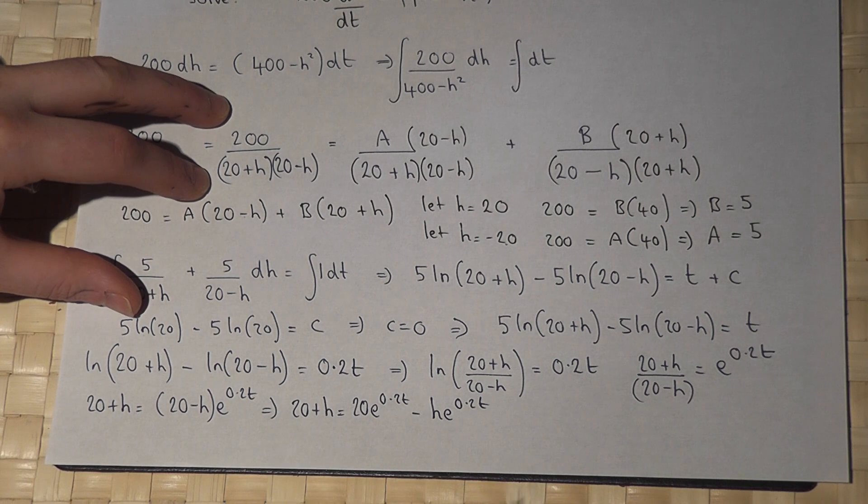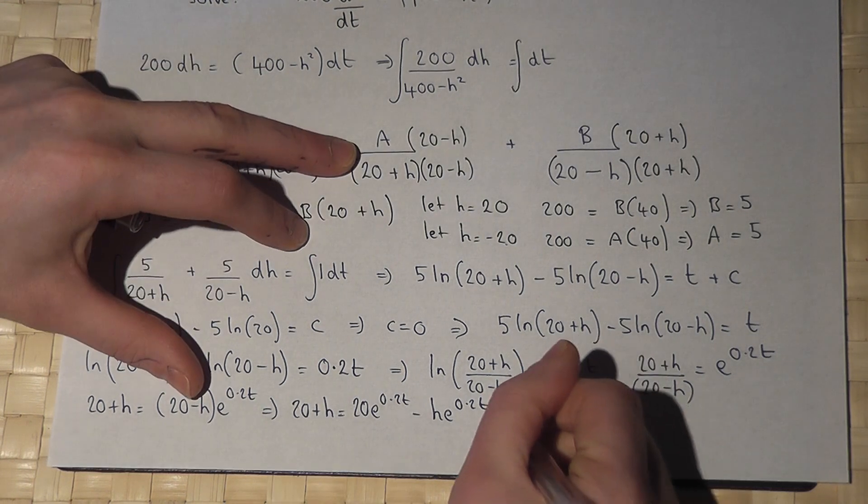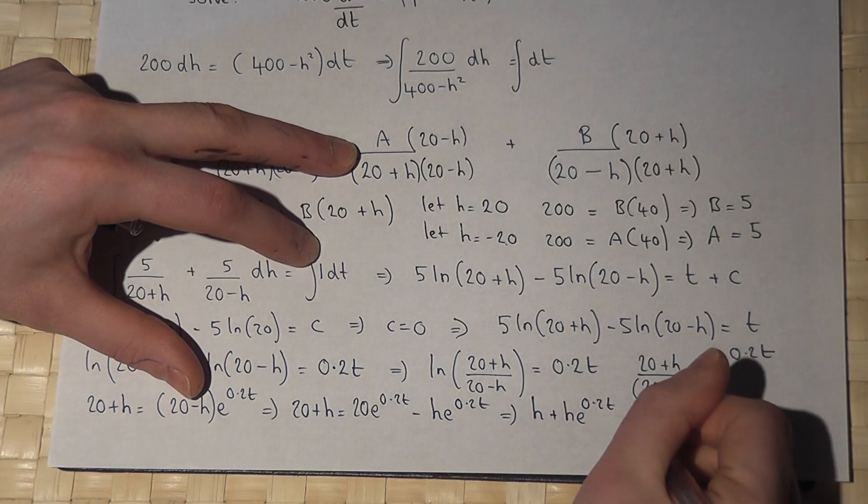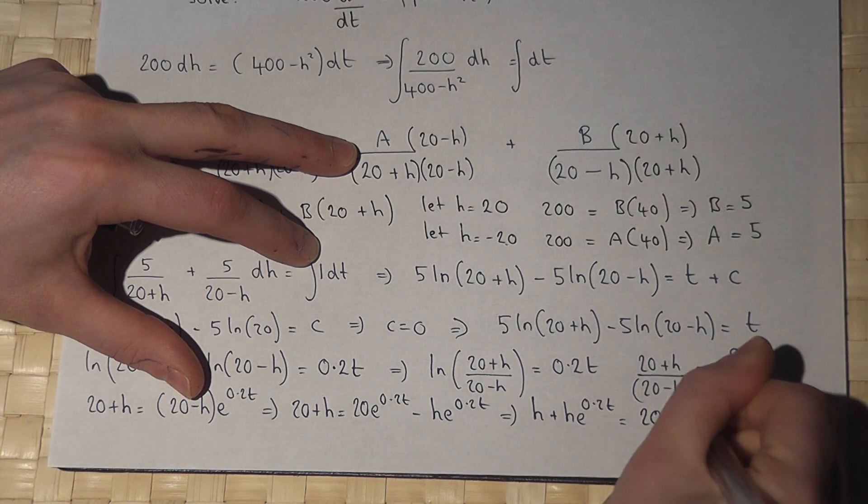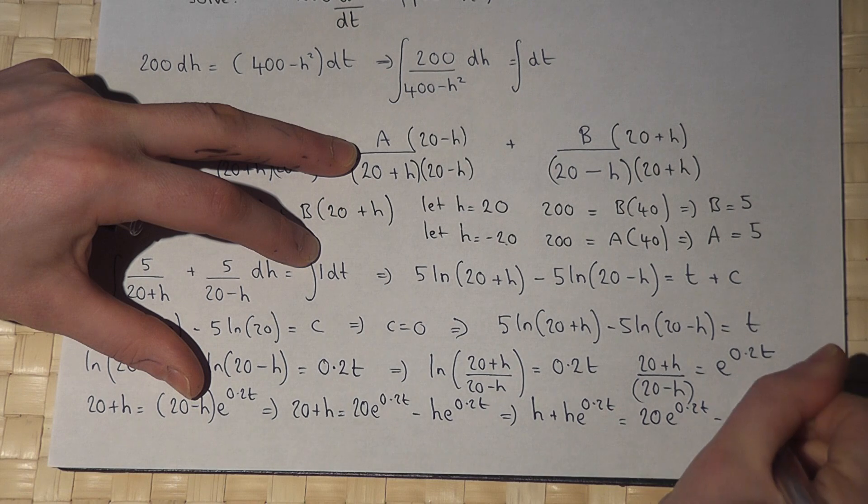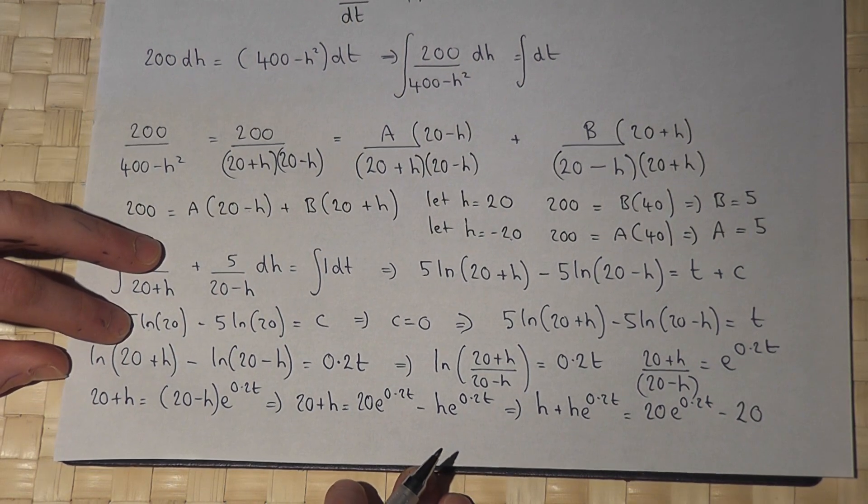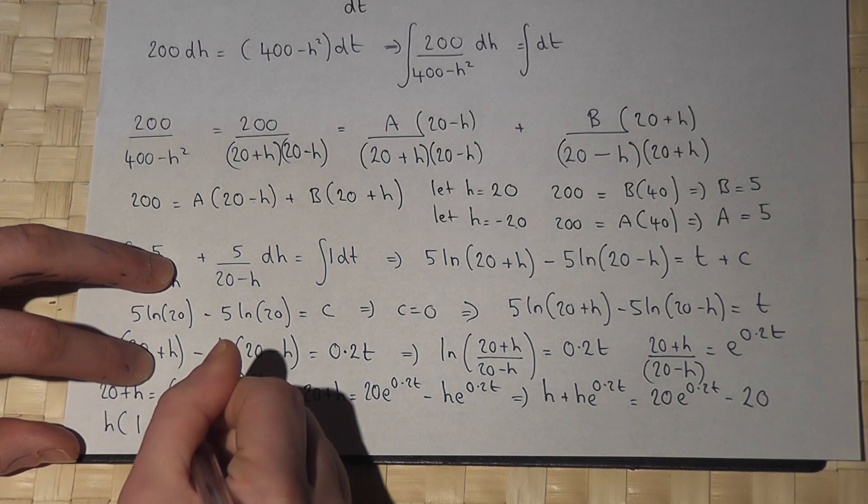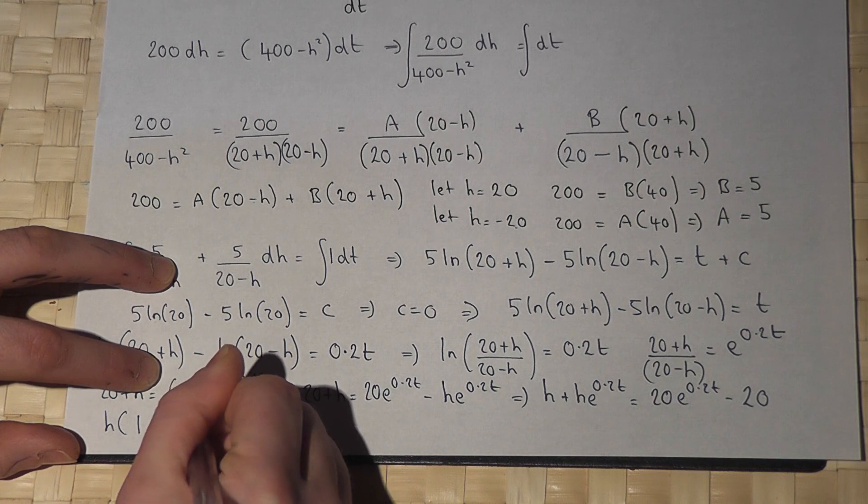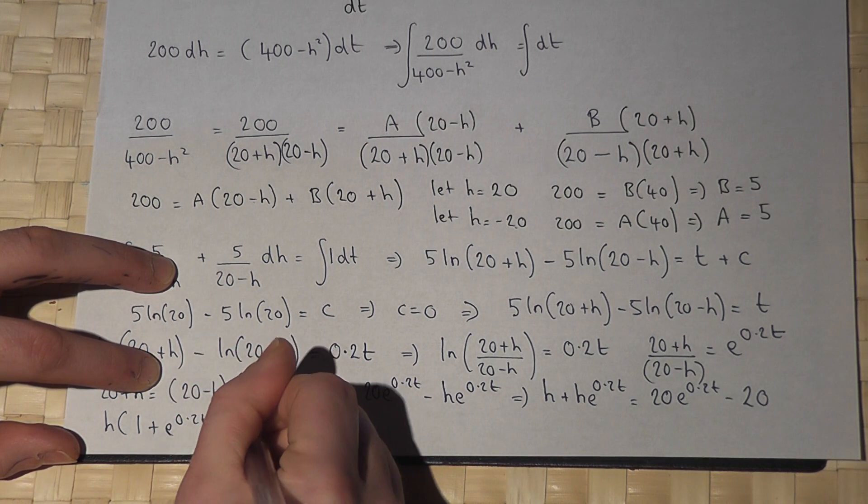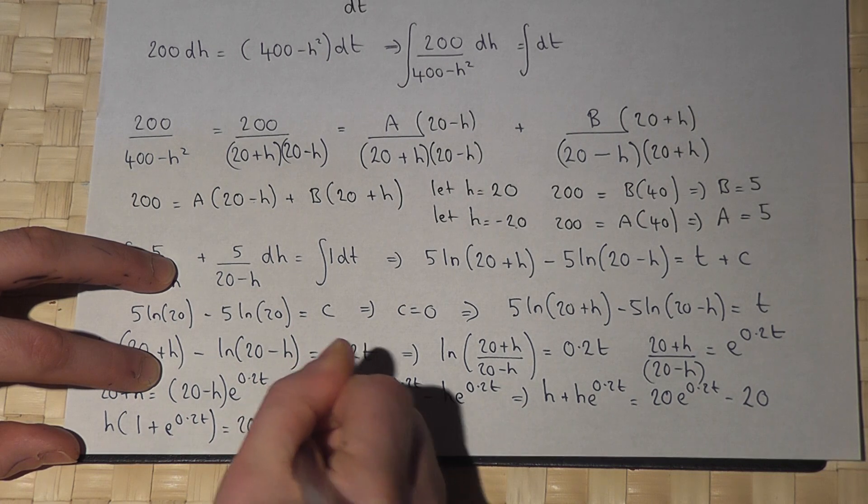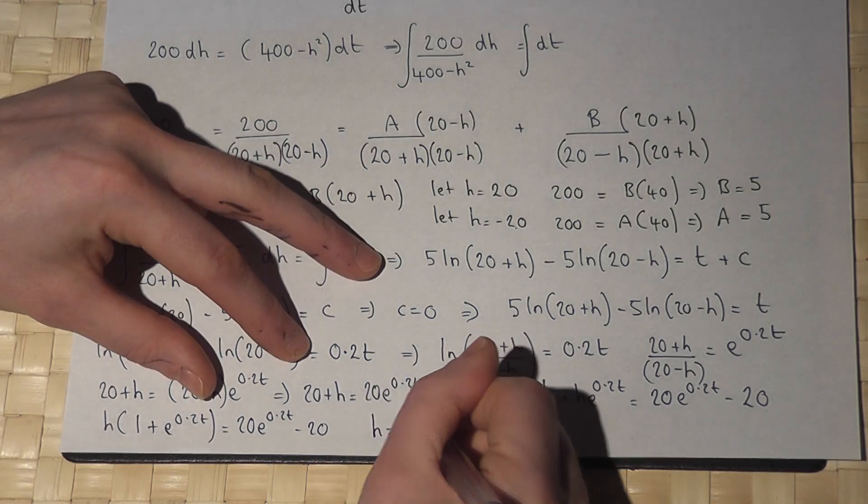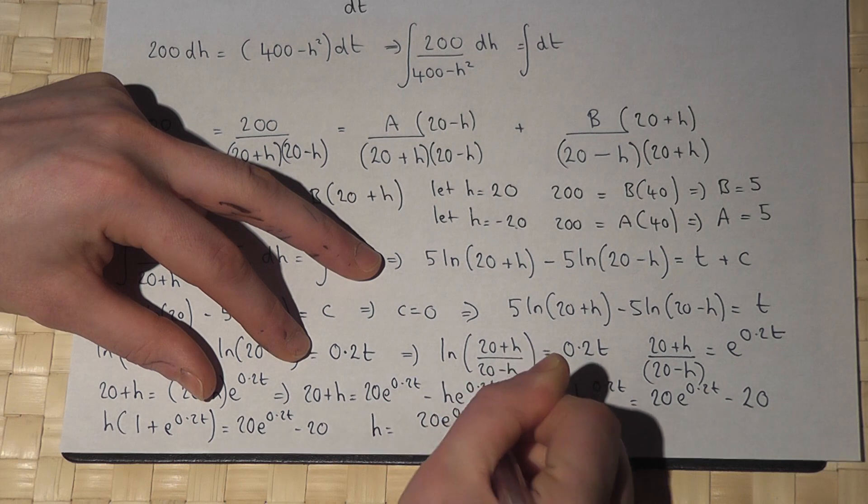So I get h plus h e to 0.2t equals 20 e to the 0.2t minus 20. Therefore h times the quantity 1 plus e to 0.2t equals 20 times e to 0.2t minus 1.